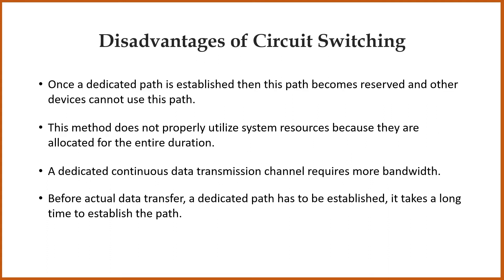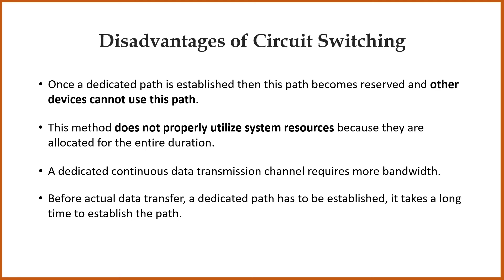Disadvantages of circuit switching: the main disadvantage is that once a dedicated path is established, this path becomes reserved and other devices cannot use it. This method does not properly utilize system resources because they are allocated for the entire duration. A dedicated continuous data transmission channel requires more bandwidth. Also, before actual data transfer, a dedicated path has to be established, which takes a long time.